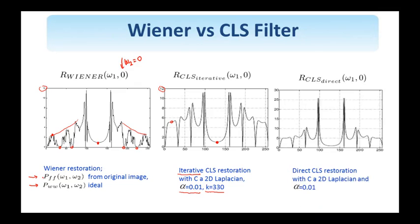We also show the slice of the frequency response of the CLS when implemented directly, using the same regularization parameter and the 2D Laplacian. Here the high value is 30, so there are higher peaks, and values at high frequencies are similarly higher — around 5 versus 2 with the Wiener filter. Based on this qualitative comparison, we expect both CLS implementations to produce noisier restorations than the Wiener filter. However, with the constrained least squares filter, we have control over the regularization parameter, and by increasing or decreasing it, we can change the values of the filter at high frequencies and change its shape.